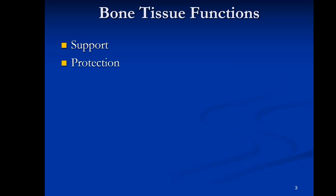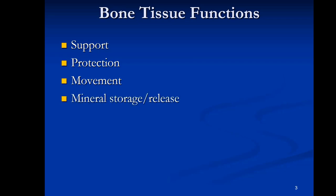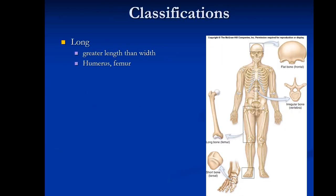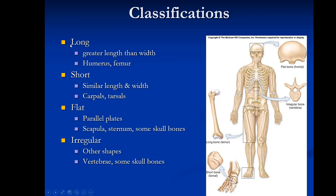The functions of bone include support, protection — the skull and rib cage protect vital organs — and movement, as bone works closely with skeletal muscle. Bone also provides mineral storage and release; calcium and phosphorus are the key minerals stored in bones. For energy storage, adipose tissue in bone creates yellow bone marrow. Red bone marrow is important in hemopoiesis, also called hematopoiesis — the formation of blood cells.